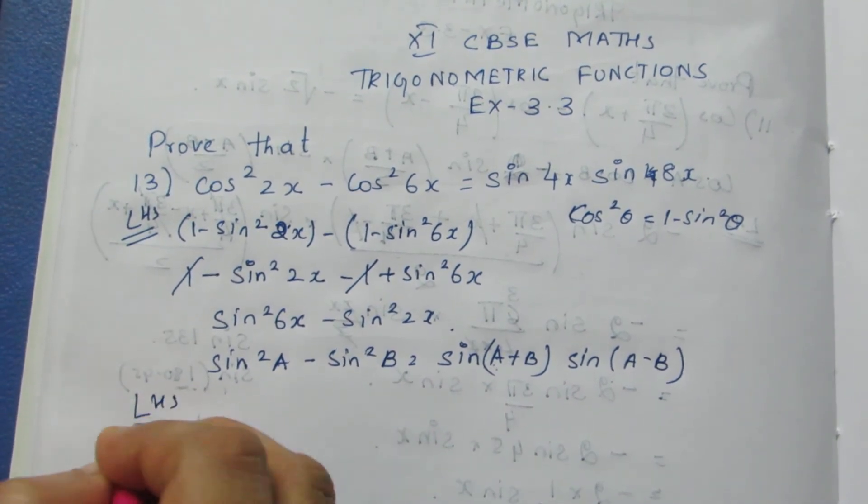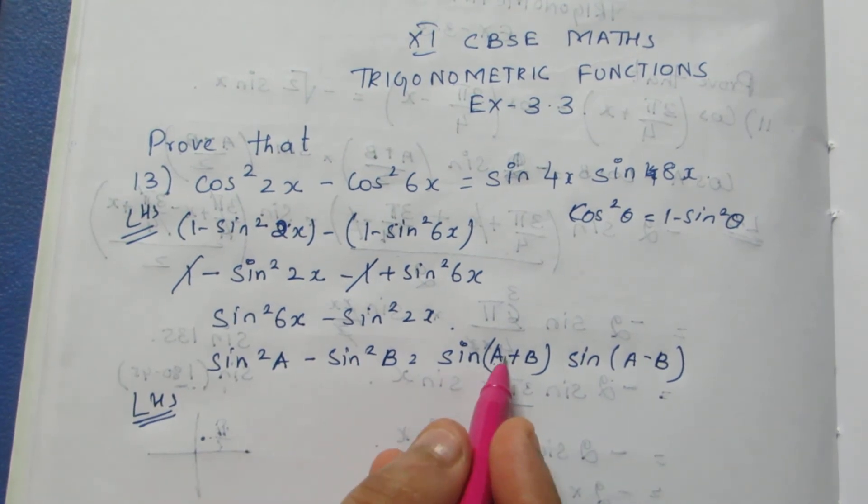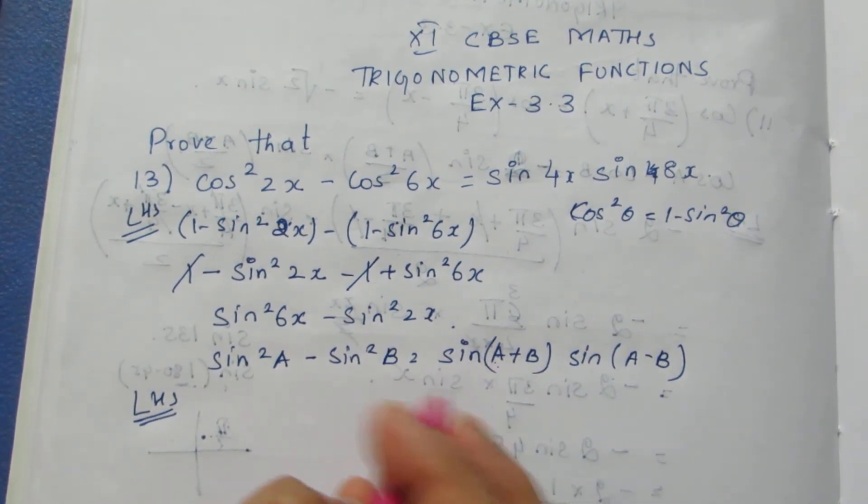So my LHS is equal to—I'm going to substitute the value of 6x and 2x instead of a and b.